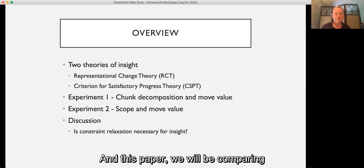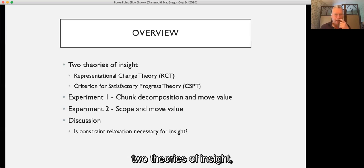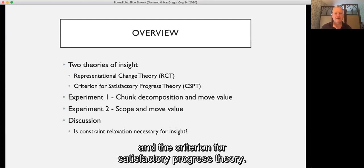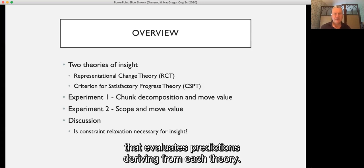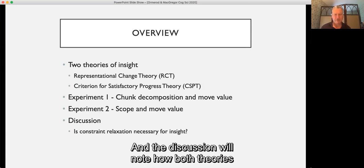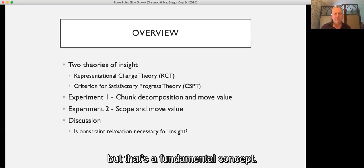In this paper we will be comparing two theories of insight: the Representational Change Theory and the Criterion for Satisfactory Progress Theory. We'll report two experiments that evaluate predictions deriving from each theory. In the discussion we'll note how both theories seem to play a role, but that a fundamental concept, the idea of constraint relaxation, is actually not necessary for insight.